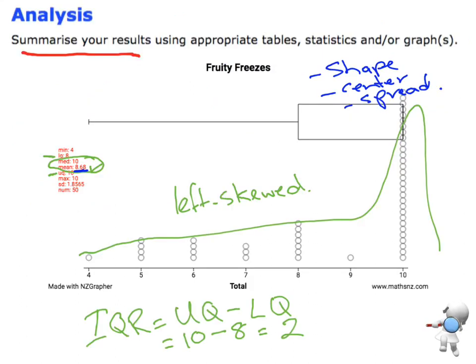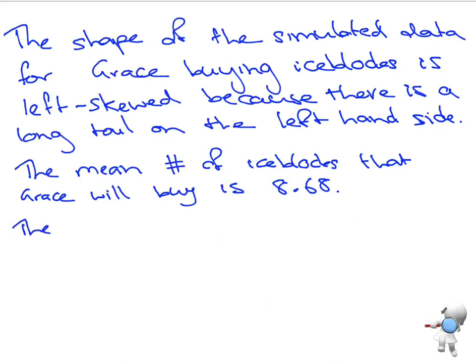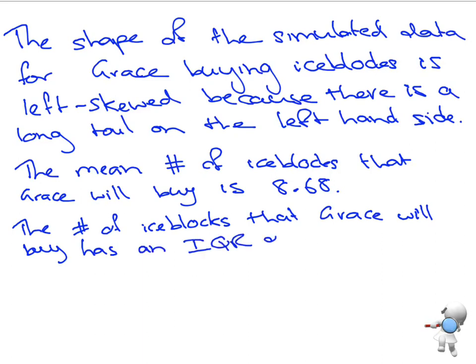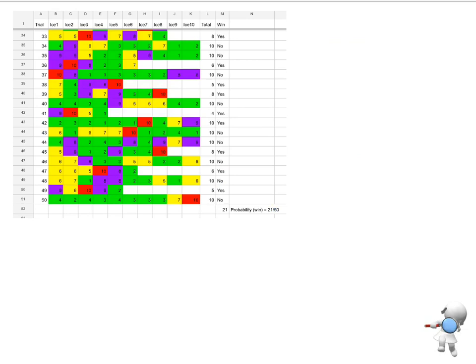And the third thing that we want to do is talk about our interquartile range, which is down here. The number of ice blocks that Grace will buy has an interquartile range of 2. Okay, so there is our analysis for that graph.